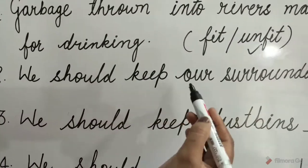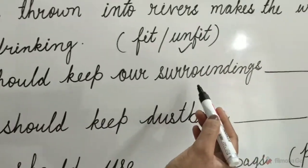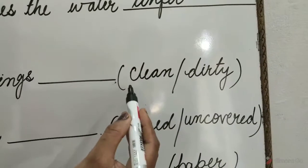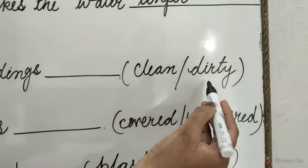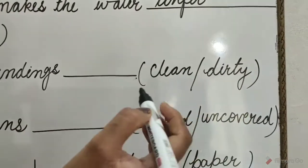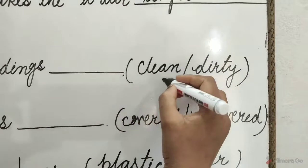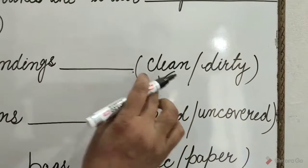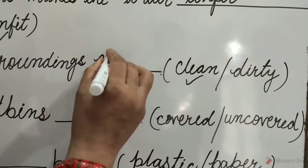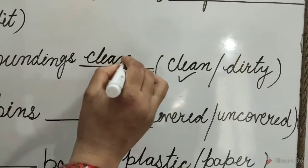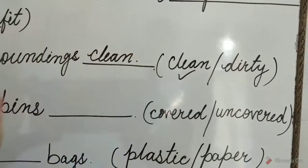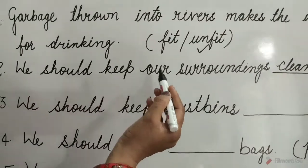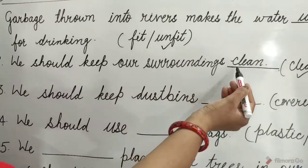Question 2: We should keep our surroundings dash. The options are 'clean' and 'dirty'. The 'clean' option is correct. So tick on 'clean' and write here: clean. We should keep our surroundings clean.